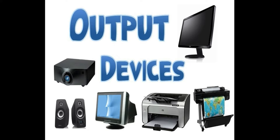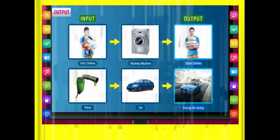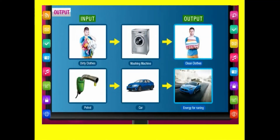Now I will give you an example of output devices. First, see — input is dirty clothes, processing is washing machine, then we get the output of clean clothes.